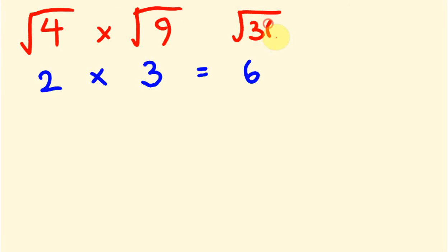What you might notice is this: the square root of 4 times the square root of 9 equals the square root of 36, and 9 times 4 equals 36. So this gives us a great little rule that we can actually use here.